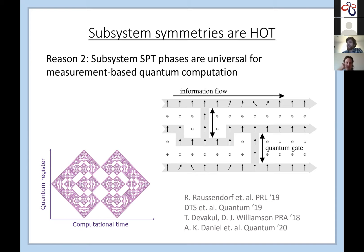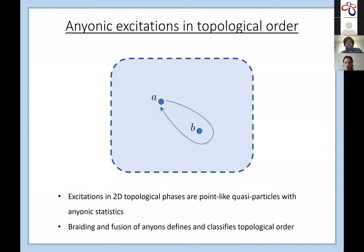To explain the other parts of the title, let me talk about topological order. In a 2D system, A and B are excitations called anyons: if you take excitation A and move it around excitation B, it may have a non-trivial effect on the ground state subspace. The way in which these anyons braid and fuse can completely classify the different topological phases.